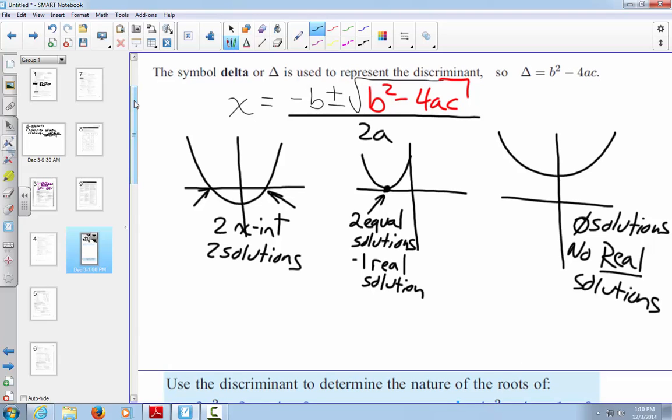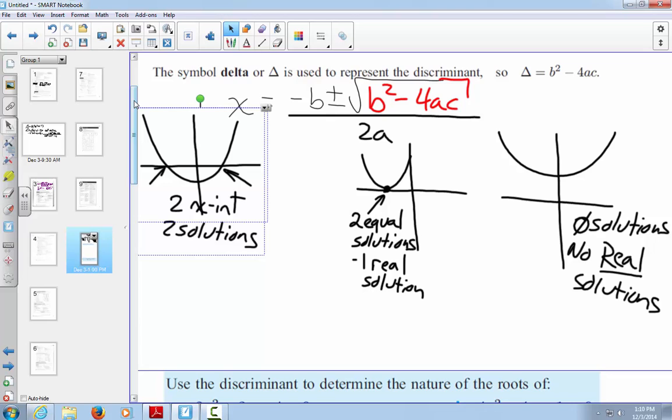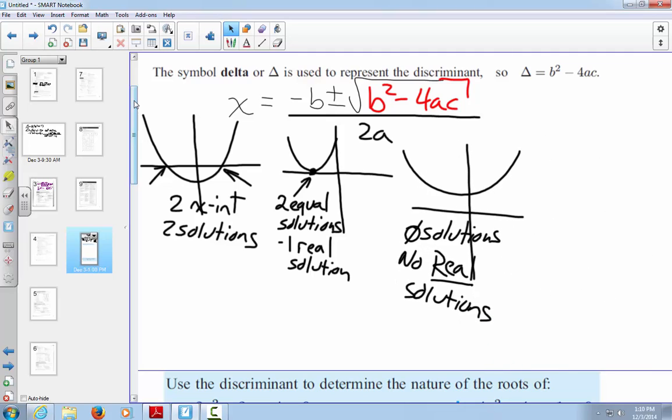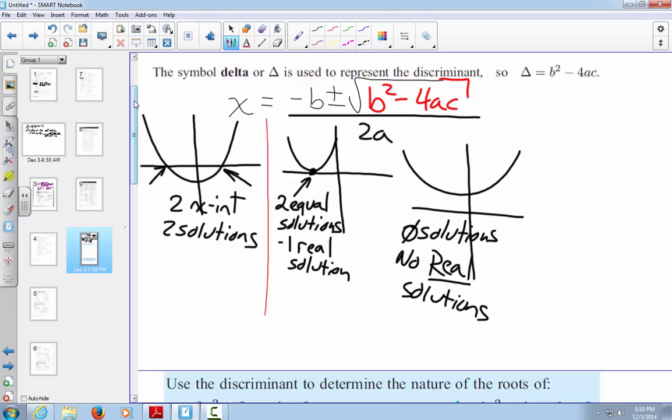And how does that play with the b squared minus 4ac? Well, it comes into the whole square root thing. Now, the reason why I want to do that, I want to make some lines so you know the difference between the three of them. So you're either going to have two solutions, one solution, or no real solutions. And it all comes into play with the b squared minus 4ac.